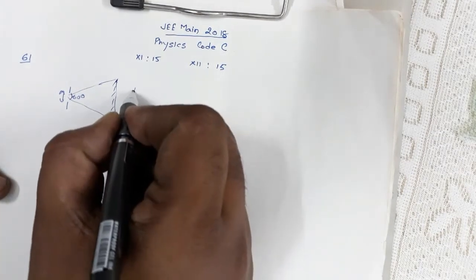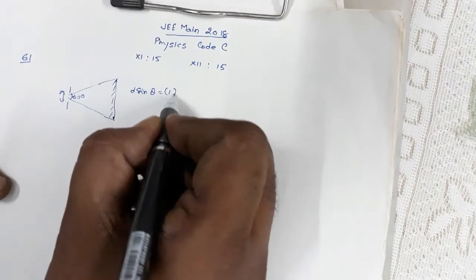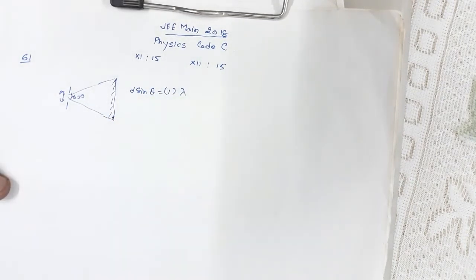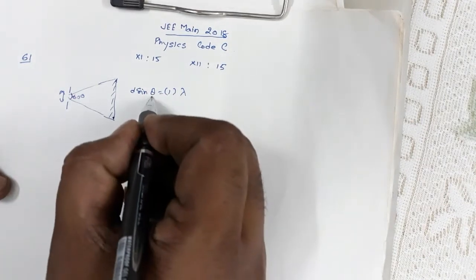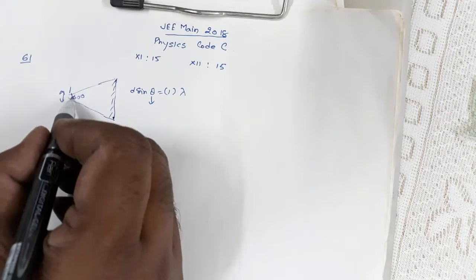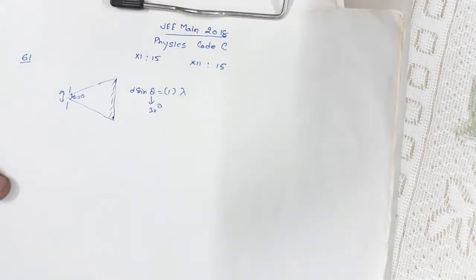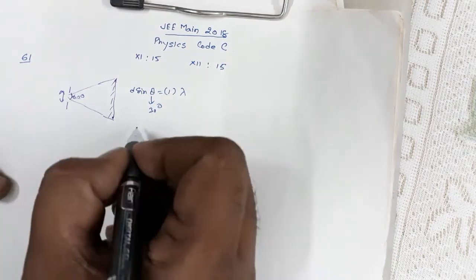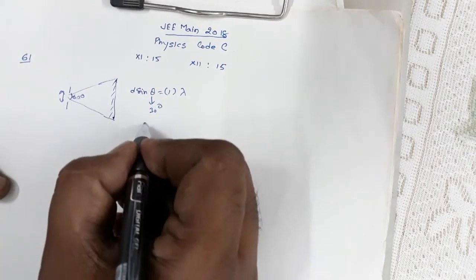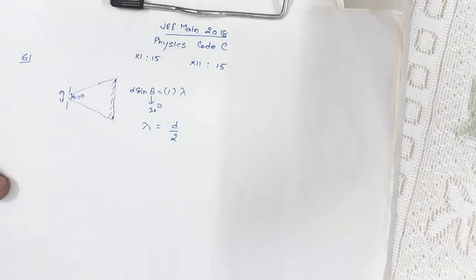For diffraction, the first order condition is d·sinθ = 1·λ. Here θ is half of the 60° angle, so θ = 30°. That gives us λ = d/2.